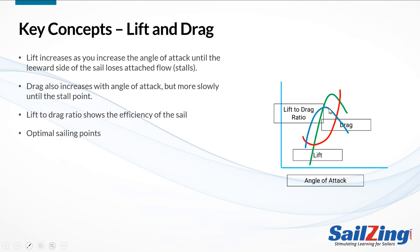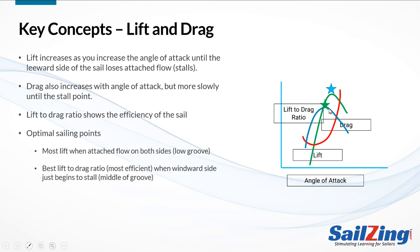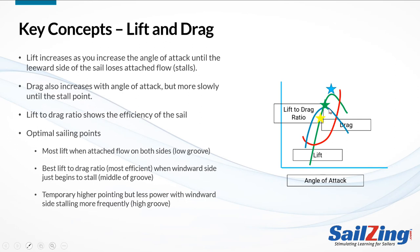These graphs help us understand the optimal sailing points for various conditions. The low groove is for when you need the most power to accelerate the boat or power through waves. The middle groove is for best efficiency — a combination of speed and pointing. The high groove is for making progress to windward at the expense of power and speed.